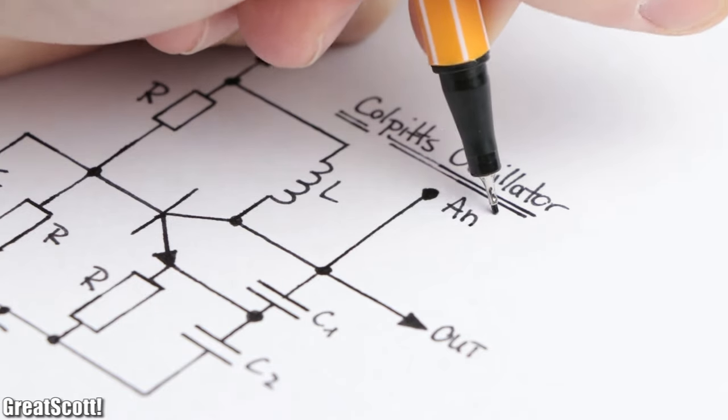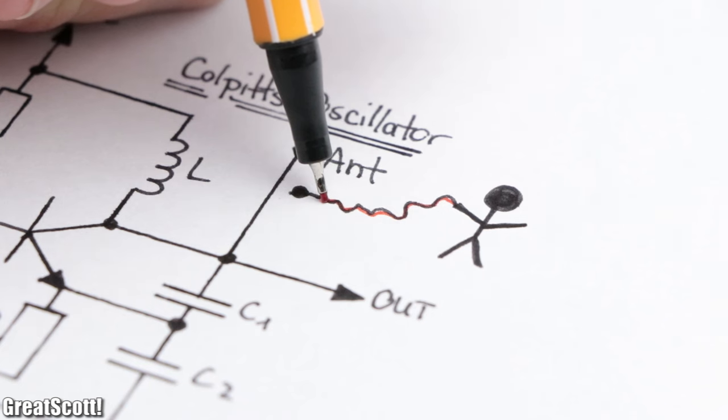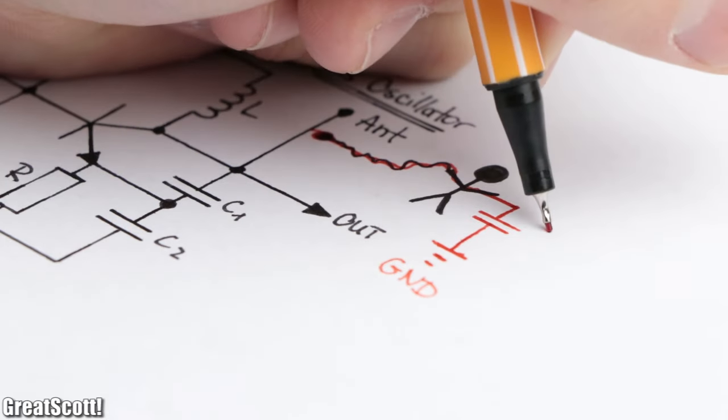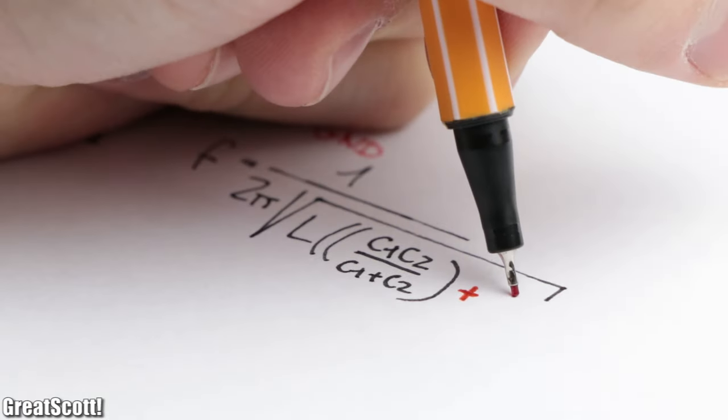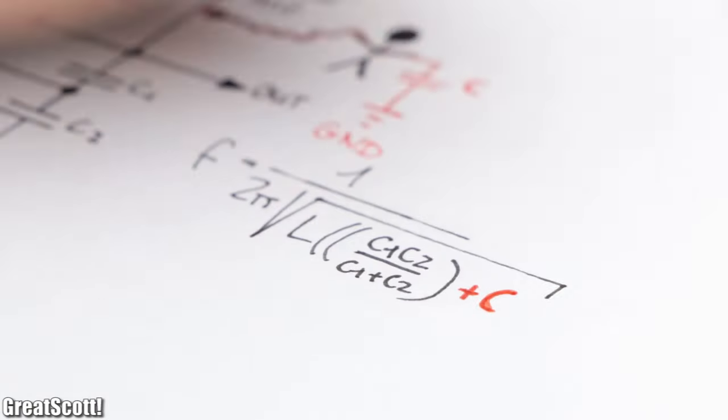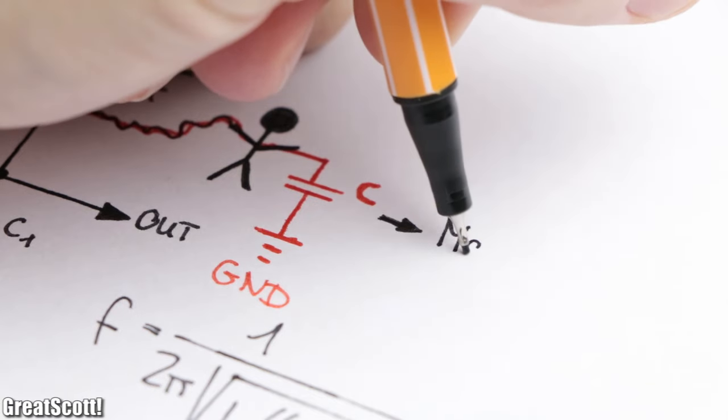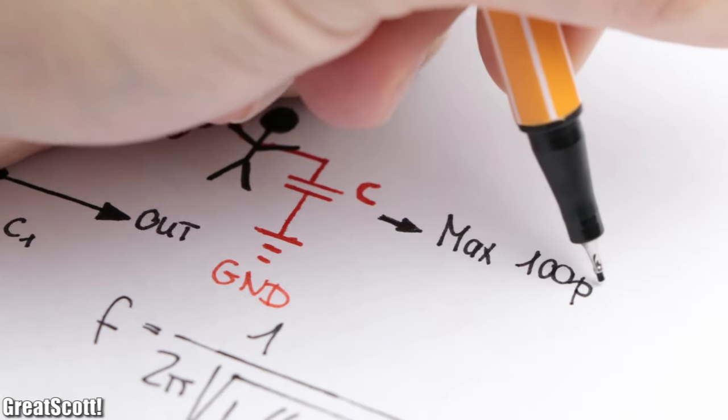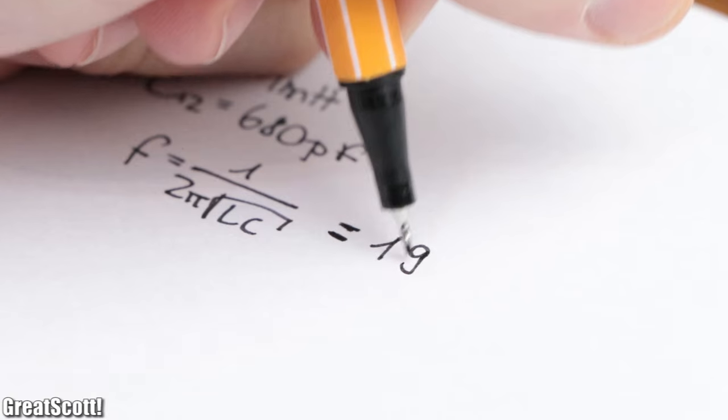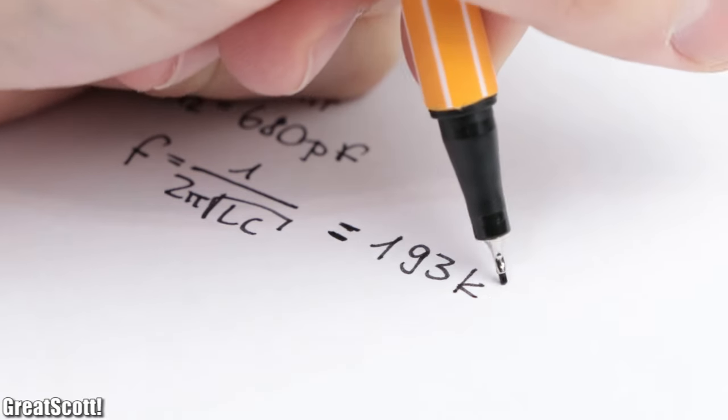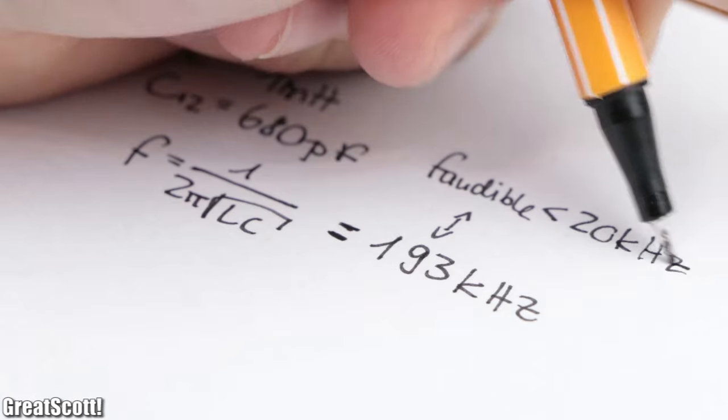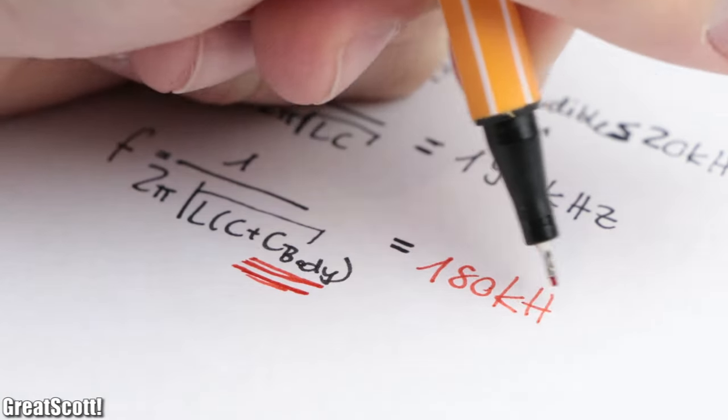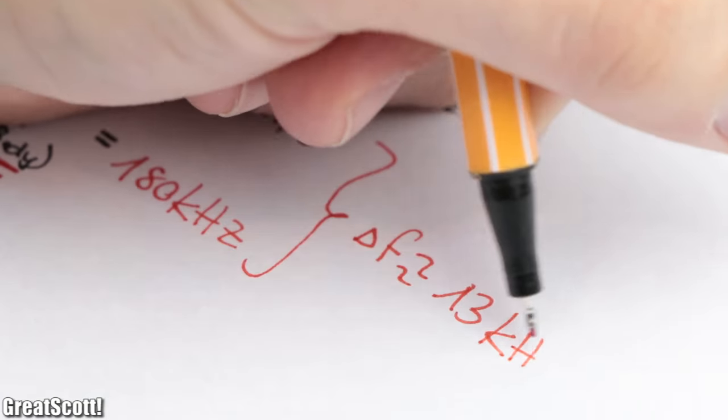If we would now add an antenna to the circuit and bring our hand close to it, our own body would act as a capacitor to ground and thus change the oscillation frequency slightly. Only problem is that our body can only act as a maximum capacitance of approximately 100 picofarads, which means we have to choose a high oscillation frequency far beyond the audible frequency range in order to affect the oscillation frequency strong enough to create a hearable difference.